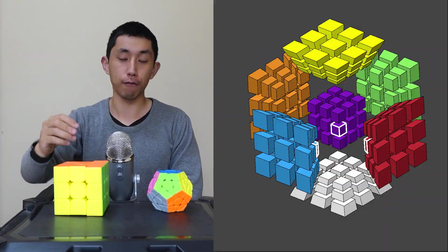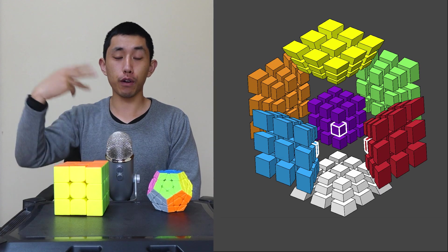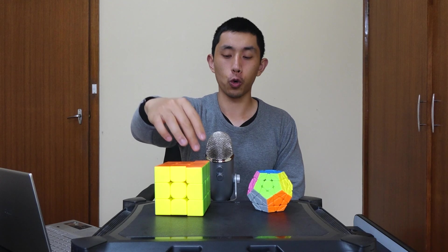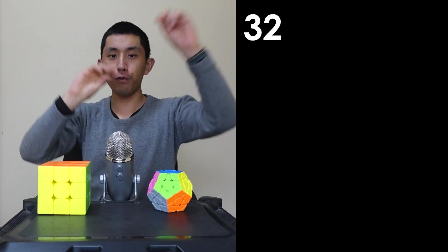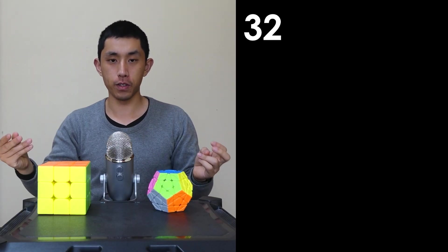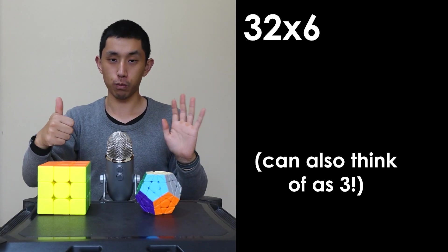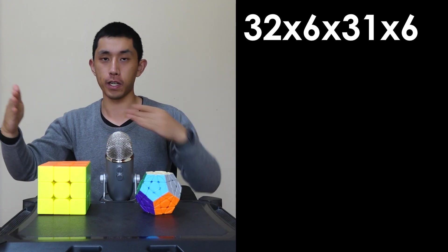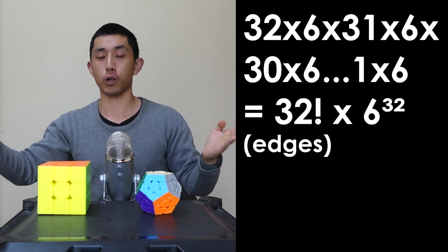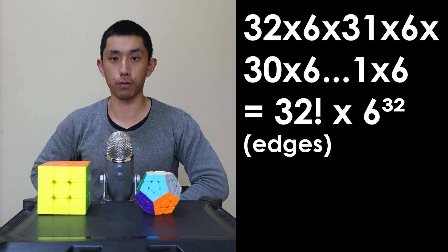First of all, we'll look at the edge pieces, which have three colors instead of two. There are 32 of them in total. But the weird thing about it, it's not like the corners where you can orient it in just one of three ways, but you can do it in one of six ways. This means 32 possible locations you can put the edges in and then six possible orientations. Then it becomes 31 locations with six possible orientations, 30 then 6, all the way to the very last one. Similar logic to before.